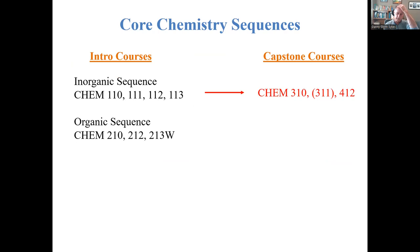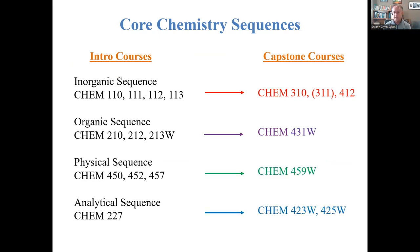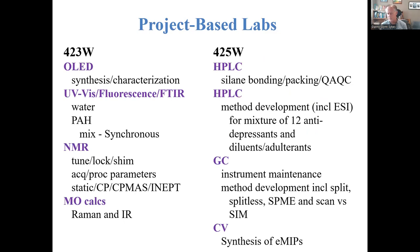One of the things in our curriculum is that we look at intro courses and capstone courses. The analytical sequence begins with Chem 227 — this course. Then students can take 423 and 425: Chem 423 is an instrumental course on spectroscopy, and Chem 425 is electrochemistry and chromatography. In Chem 423, we do project-based labs and also build instruments. This part of the first lecture is also partly an advertisement for the 400-level courses, since students have the option not to take them.